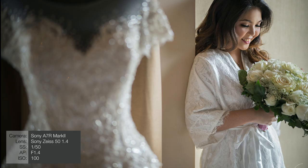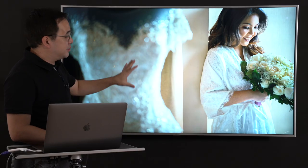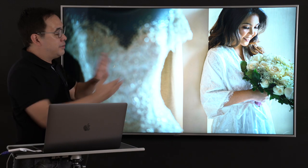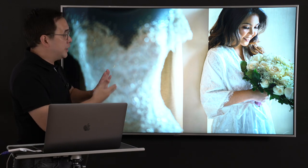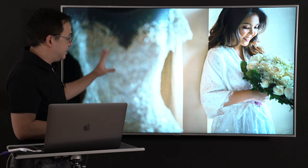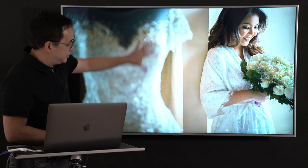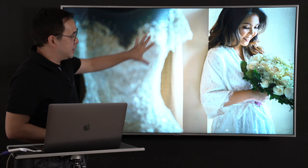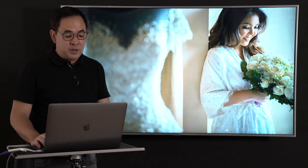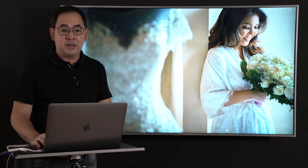I always like having the gown as the foreground to create a frame around my subject, the bride. I shot this one with a 50mm because with an 85mm I would have had too much compression — I wanted to give a little depth. I shot it at F1.4 to create beautiful bokeh. Settings: 50mm, 1/50, F1.4, ISO 100.